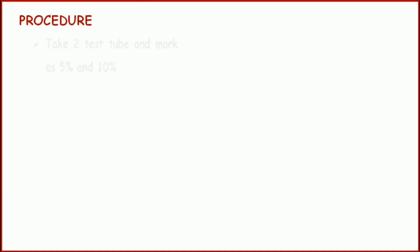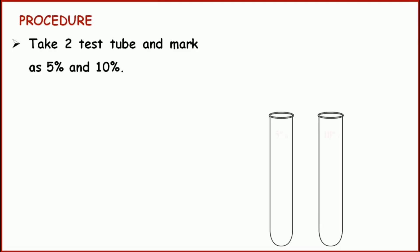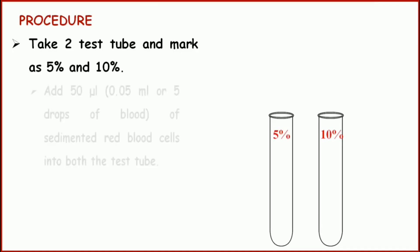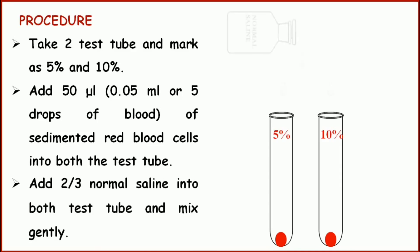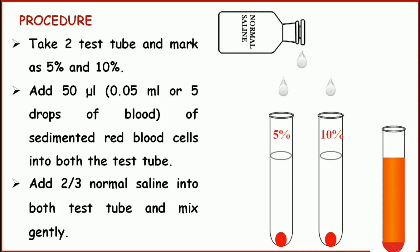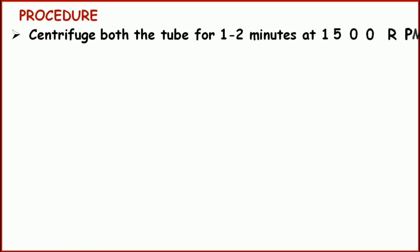Next is the procedure. We have to take 2 glass test tubes and mark them as 5% and 10%. We have to add 50 microlitres of sedimented blood cells into both tubes. You can use 0.5 ml or 5 drops of blood also. Add normal saline to two-thirds of the test tube and mix it well. Then centrifuge both tubes for 1 to 2 minutes at 1500 rpm.